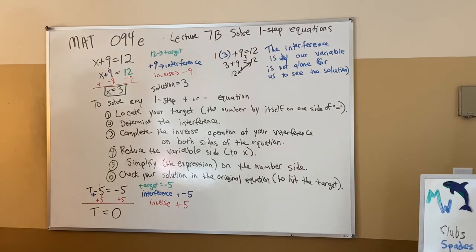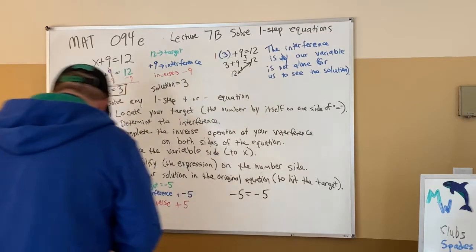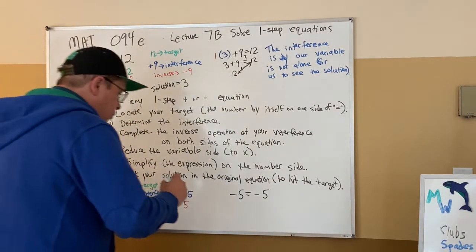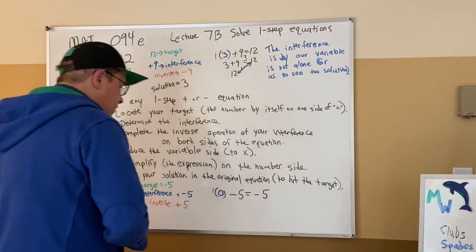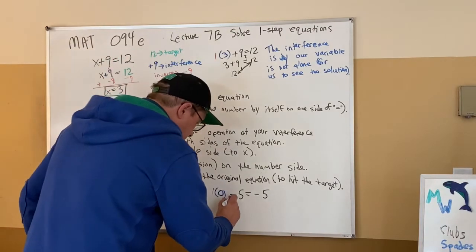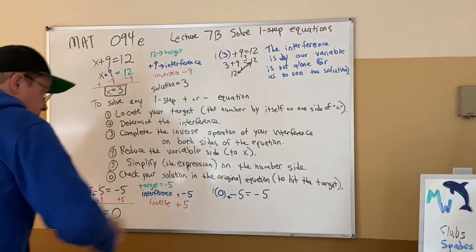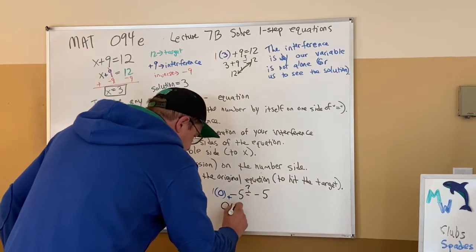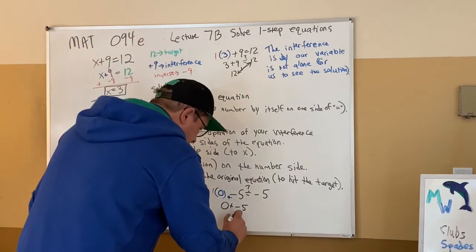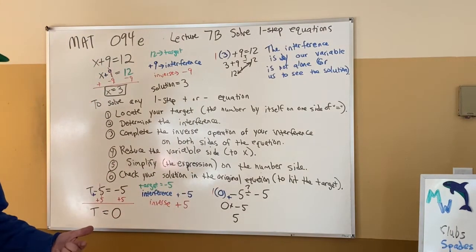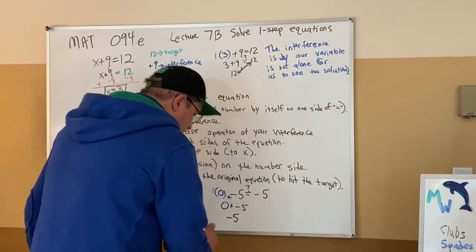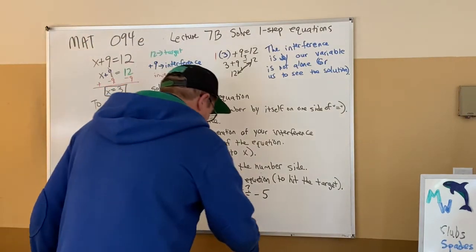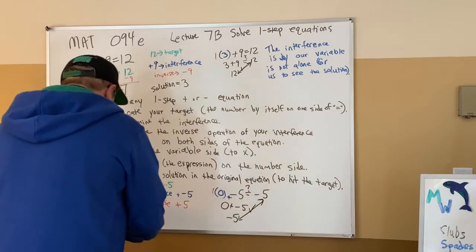So we think t = 0. Let's verify. Going back to t - 5 = -5, we put in zero: 1 × 0 plus negative 5. Zero plus negative 5 — the larger in absolute value is the negative 5, so the result is negative 5. It hits the target. So t = 0 is confirmed as the solution.